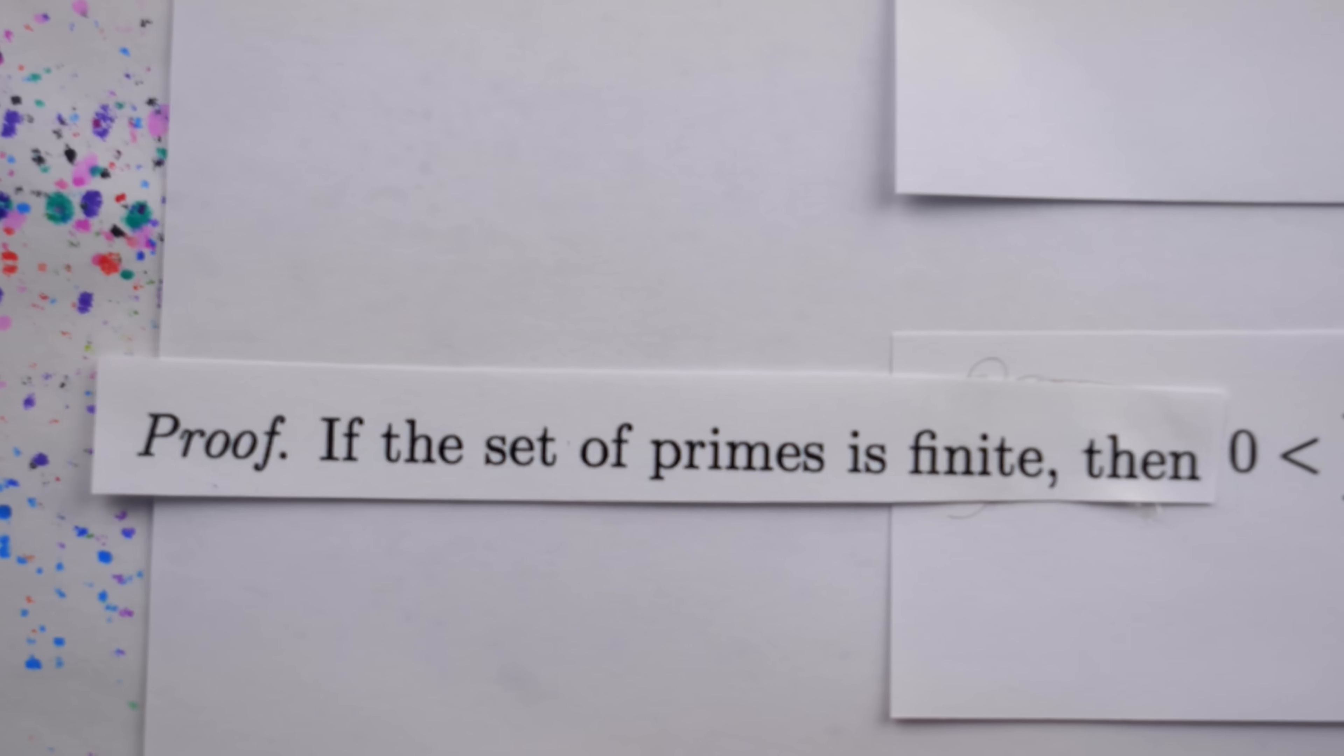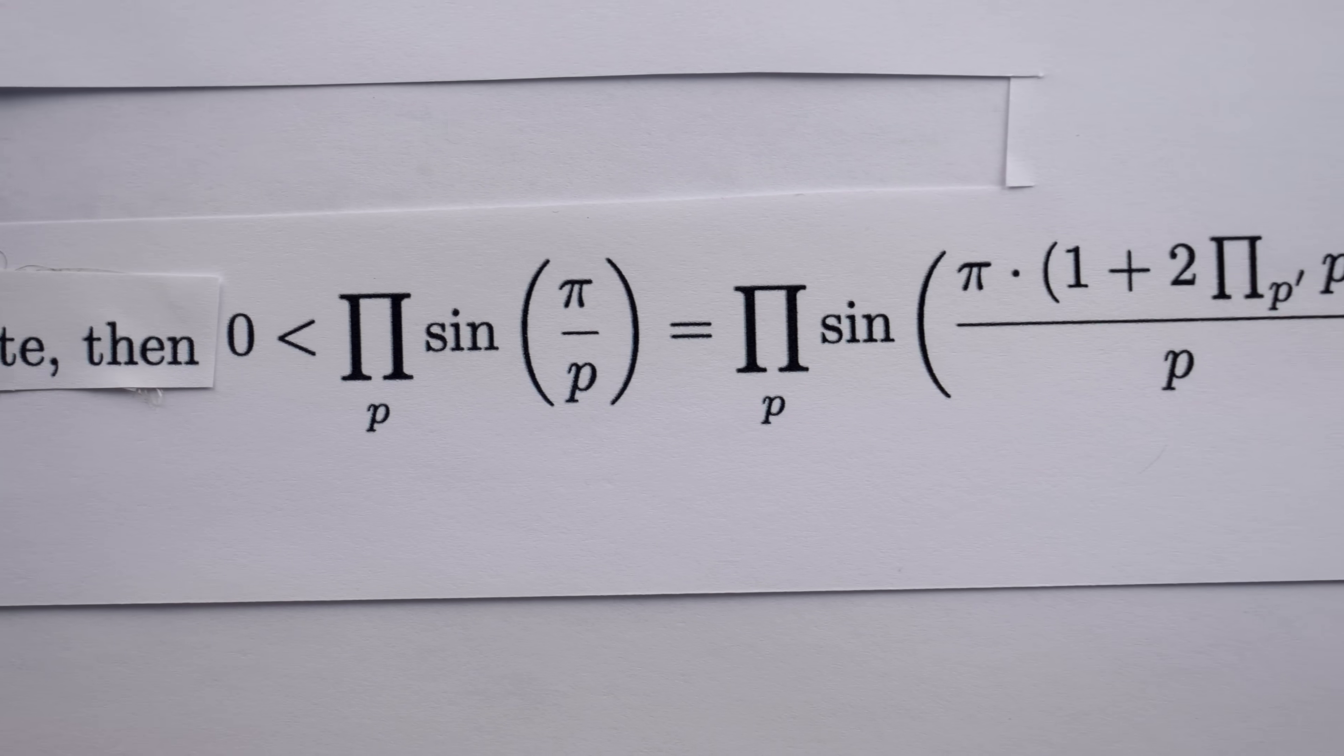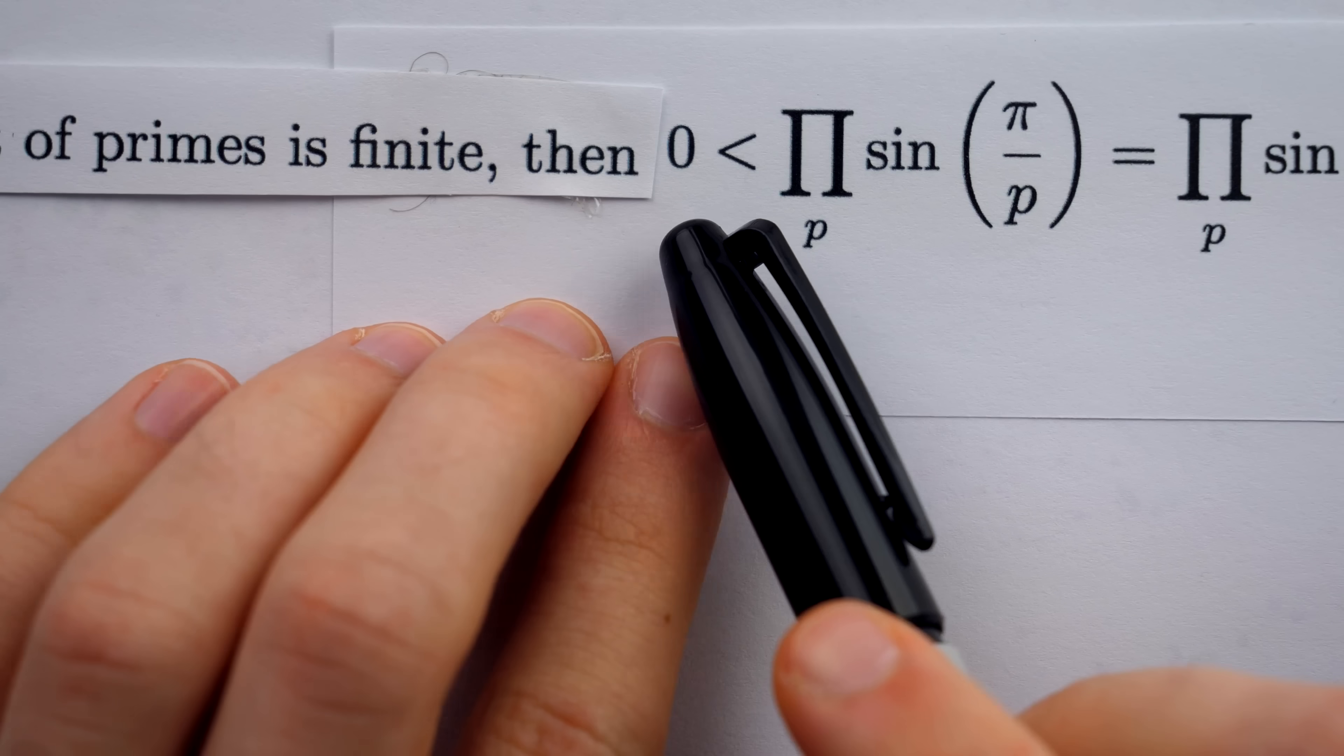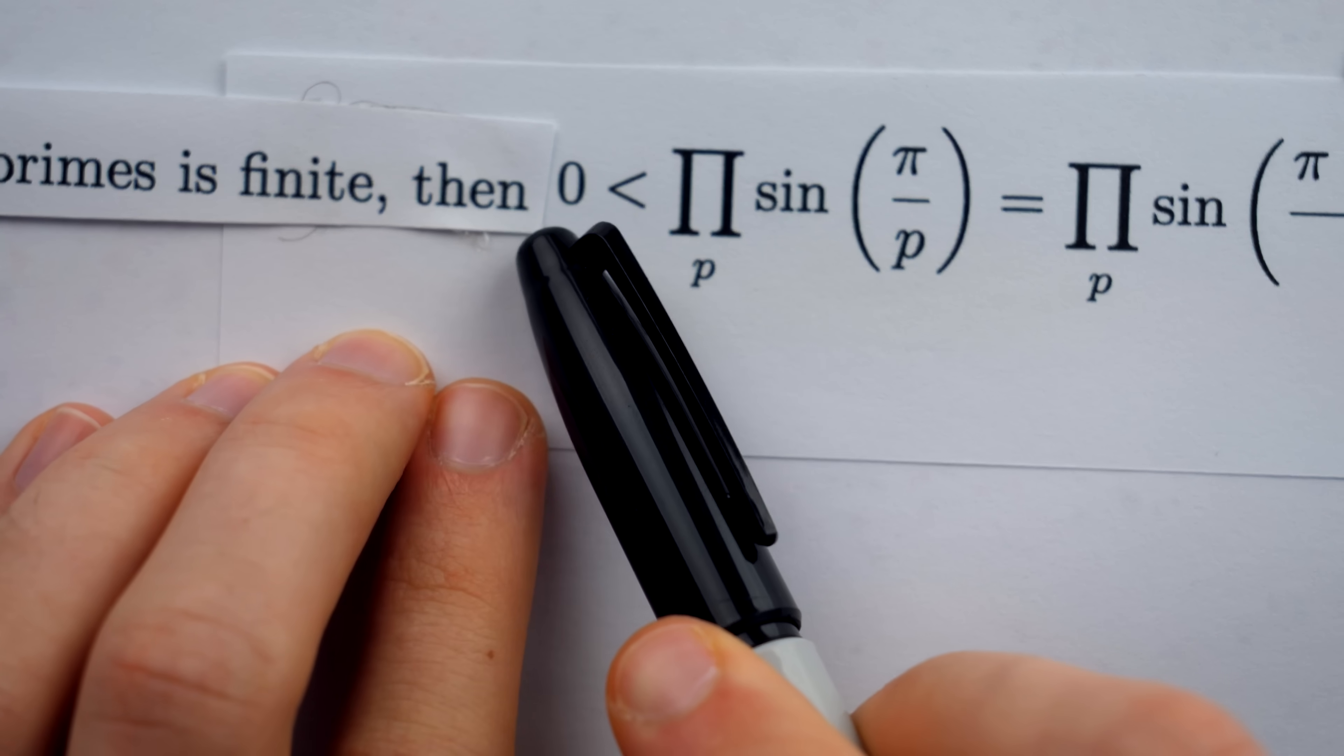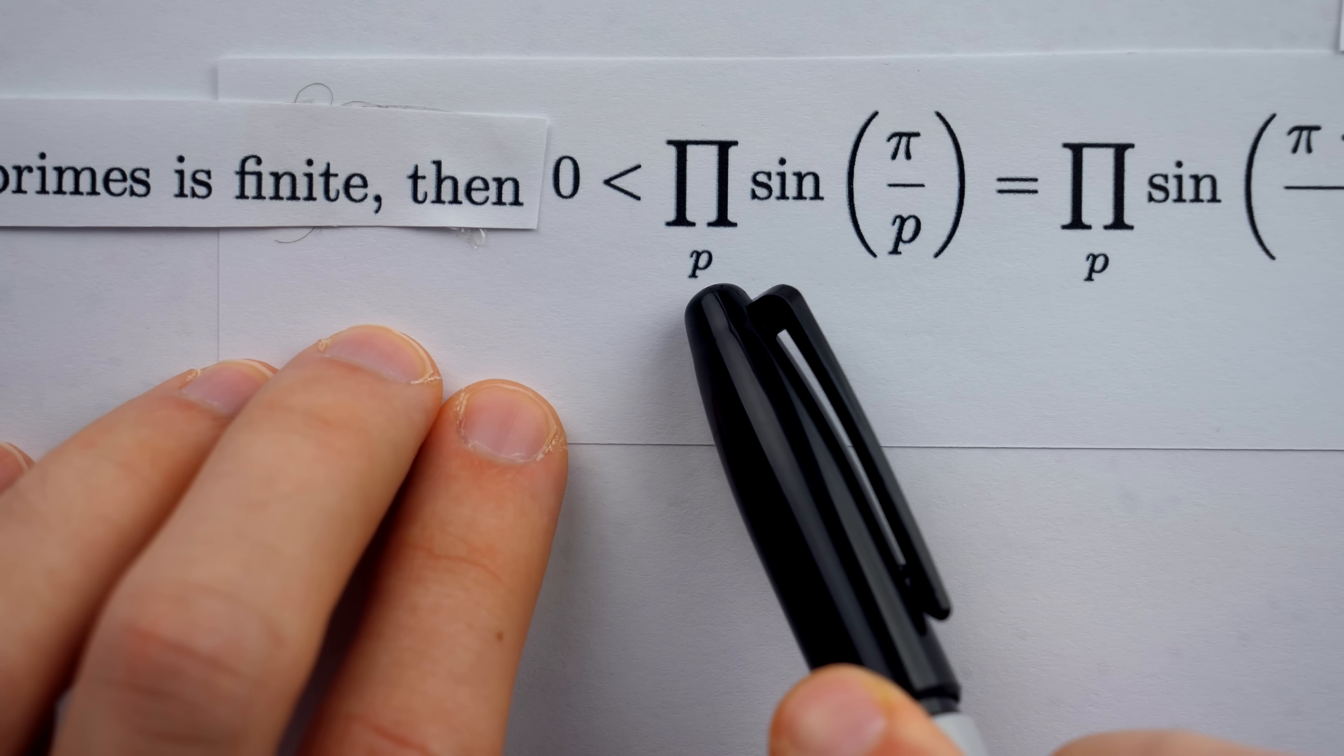All right, we begin by assuming that the set of primes is finite, and we're going to show this leads to a contradiction. The first inequality is that zero is less than the product of sine of pi over p for all primes p.